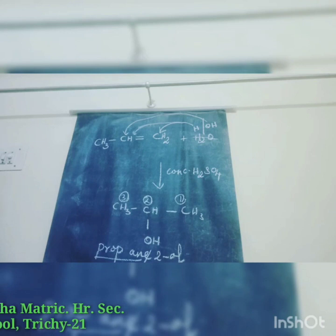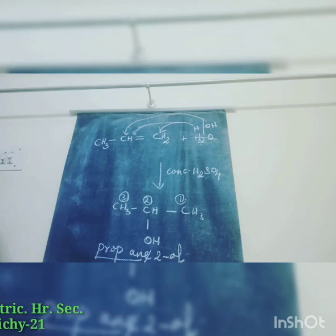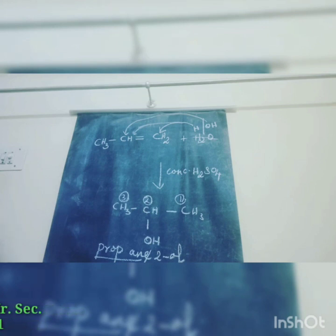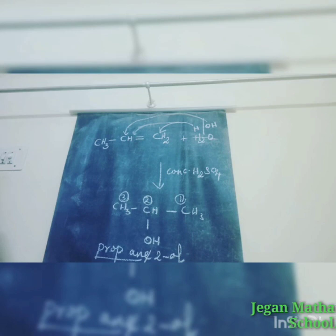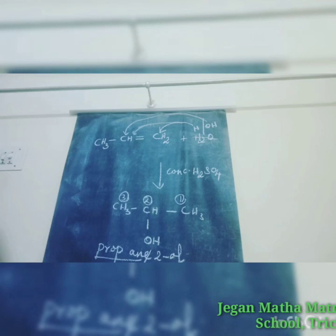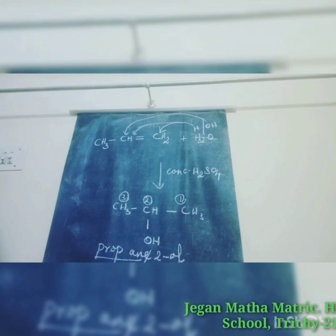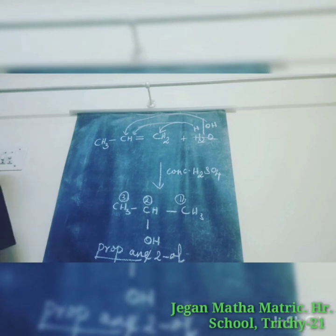Next preparation is preparation of glycol. We have already learned that the hydroxylation of ethylene using cold alkaline solution of potassium permanganate — that is Baeyer's reagent — gives ethylene glycol. Ethylene plus H2O in the presence of cold alkaline KMnO4 undergoes oxidation to give ethylene-1,2-diol.